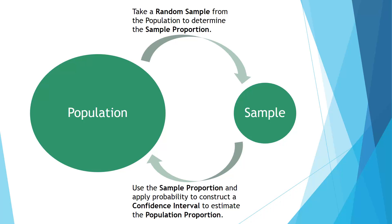We apply some probability to that sample proportion and the given sample size, and we use that information to construct a confidence interval. We use that sample to help us draw an inference about the population for that characteristic that we're interested in.